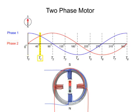At time 1, phase 1 and phase 2 have equal amounts of current flow, which creates a flux between the adjacent poles. This flux causes the rotor to turn 45 degrees to the left.